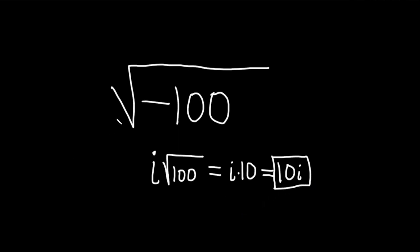A faster way to do this is to say there's a negative in the square root that's going to give me an i. But the square root of 100 is 10. So it's just going to be 10i.